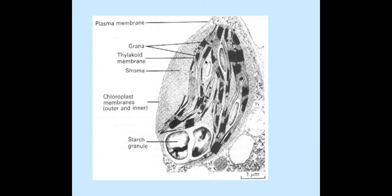We have the plasma membrane — or the surface membrane — which is actually the double membrane with the inner and outer membrane. We have the grana, which are the stacks of thylakoid membrane, and they appear darker in colour. We have the thylakoid membrane, which is membrane but not as dark because it's not stacked up. We also have the starch granule present as well.